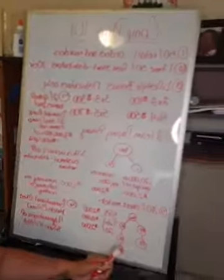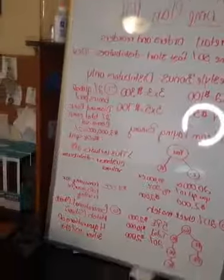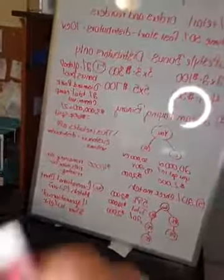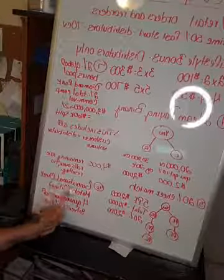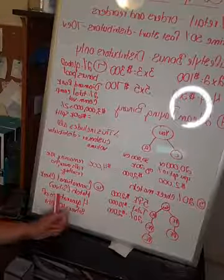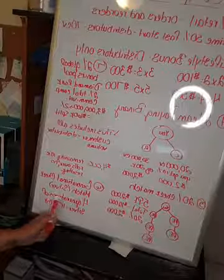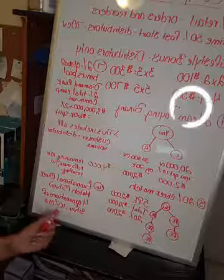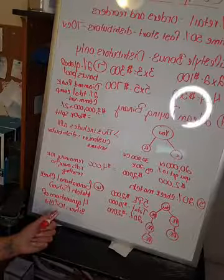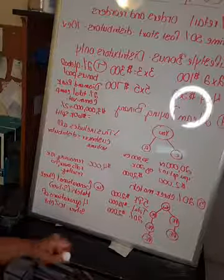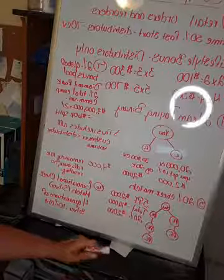Another way that we are compensated—I'm gonna slide this over here so you can see it a little bit better—we have what we call generational check matching. That's when you have reached the silver level. Once you get four generations of silver, you're also gonna get a 10% check match.